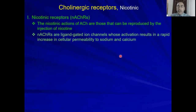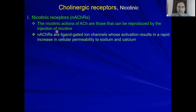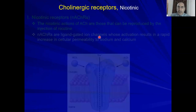Let's talk about nicotinic receptors first, because they are the beginning — starting from the CNS. They are called nicotinic because the action of acetylcholine on these receptors can be reproduced by the injection of nicotine. They are ligand-gated ion channels.